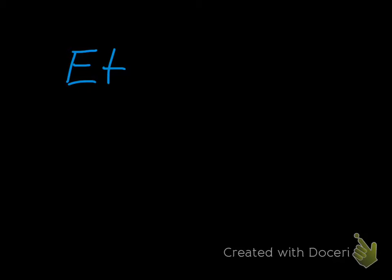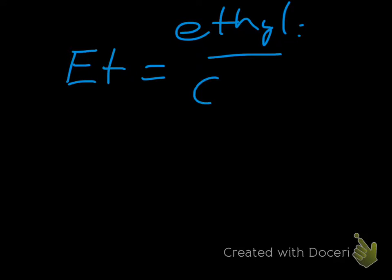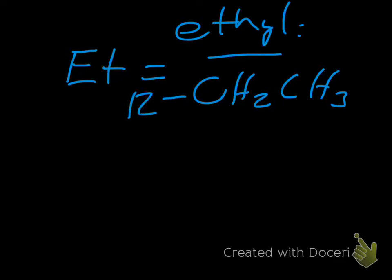A quick nomenclature note: whenever we see 'Et', that's just shorthand for an ethyl group, which is CH2CH3 connected to some kind of R group, oxygen, or what have you. It's just easier to write 'Et'.